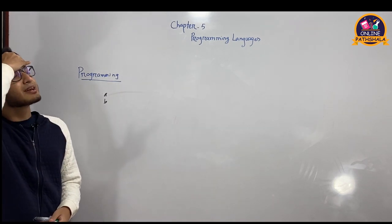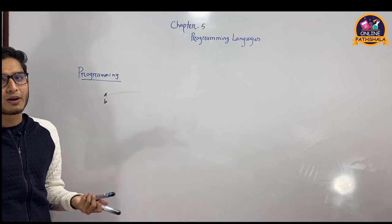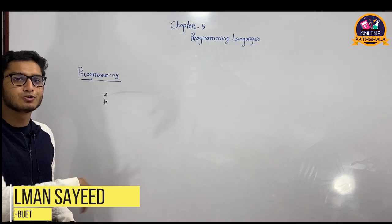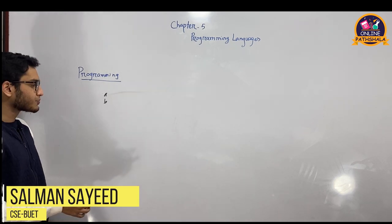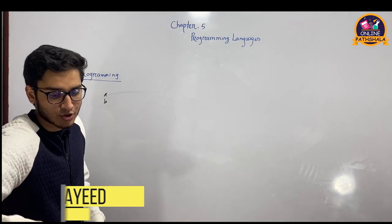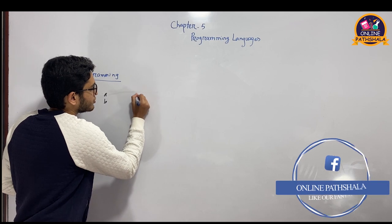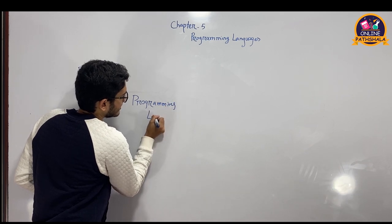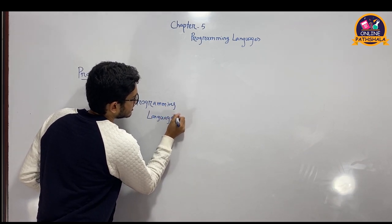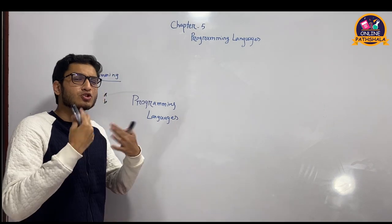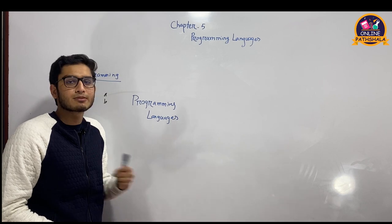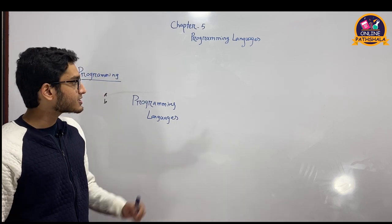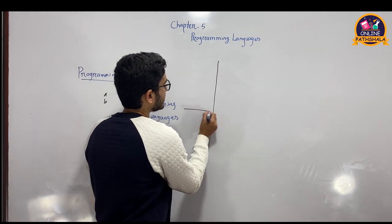In the first language, when the computer started, the language was completely different. Today, programming languages are completely different from before. Programming languages are similar to human languages — people learn languages like English, Urdu, Arabic, etc. Similarly, the computer also has its own language. We learn how to run the computer using these languages.